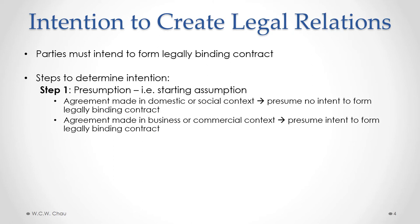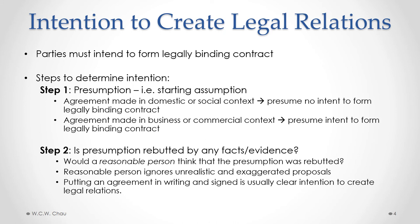So step one sets out our starting point. Step two, we ask: is that presumption rebutted by any of the facts or evidence of the particular case? We actually look at what happened and ask whether a reasonable person would think the presumption was rebutted. For example, if an agreement was made between two family members, the presumption would be that there was no intent to form a legally binding contract. But if the two family members put their agreement in writing and both signed it, a reasonable person would think that is a clear intention to form a legally binding contract.